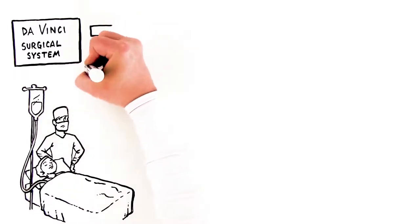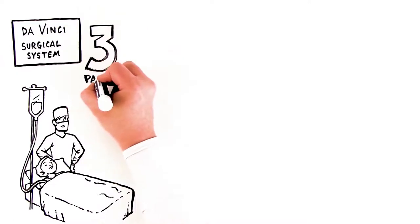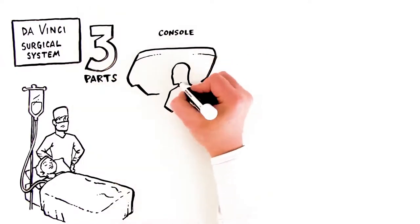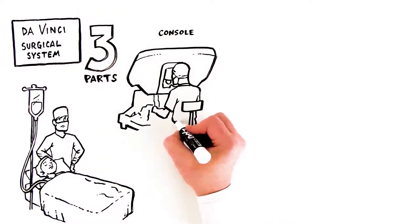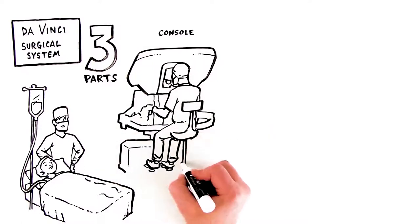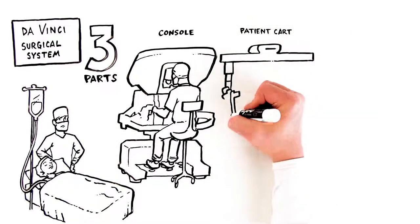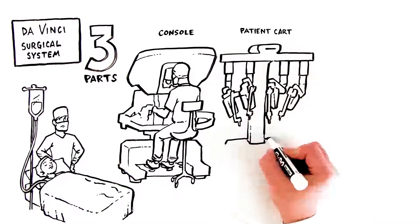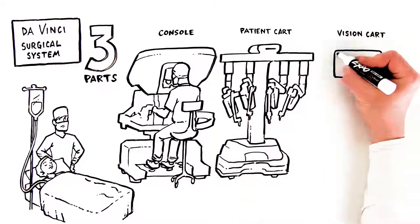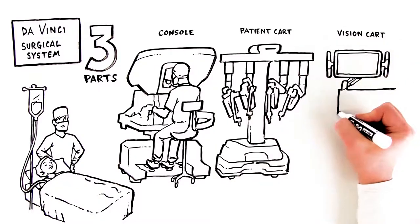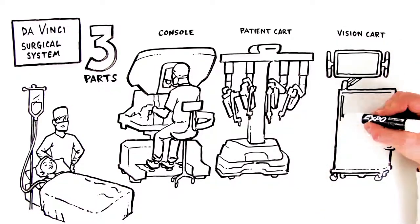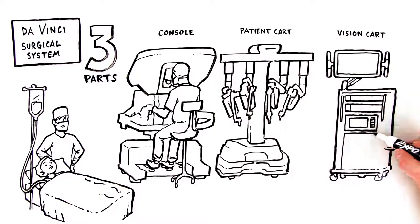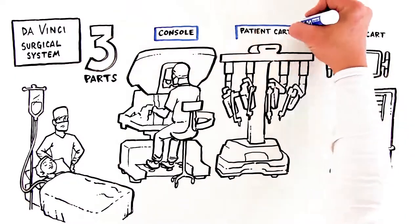The DaVinci is made up of three separate parts. The console is the control center where the surgeon sits to perform the operation. The patient cart holds the camera and surgical instruments your surgeon controls from the console. The vision cart manages communication between all components and has a video screen that lets the care team view the surgery as it's happening.